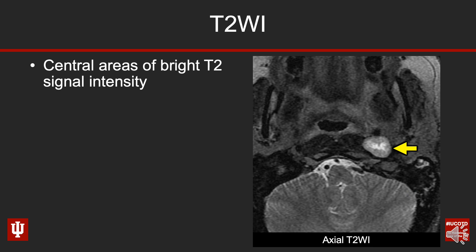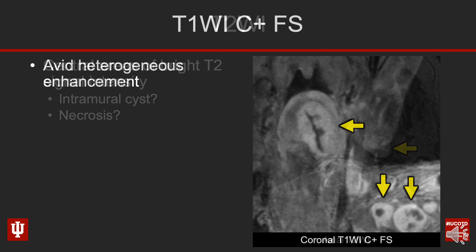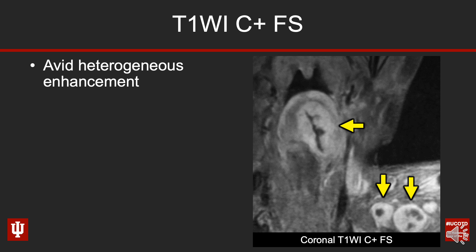Here's an axial T2-weighted image through the level of the nasopharynx, looking in cross-section at that T2-bright mass in the carotid space. Predominantly this mass is T2-bright, but internally right in the middle there is a very bright central region. When you see this kind of pattern, you wonder: am I dealing with an intramural cyst like in a schwannoma, or is this potentially necrosis like you might see in something more aggressive?